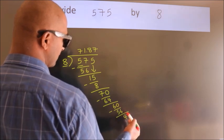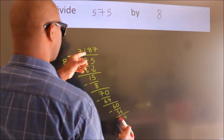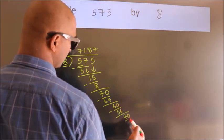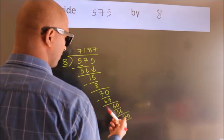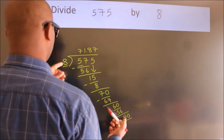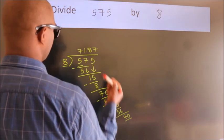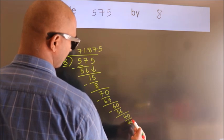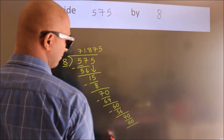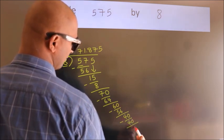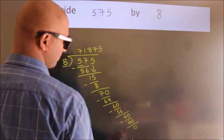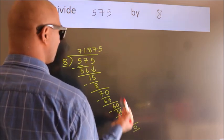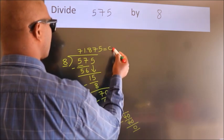After this, we already have the decimal, so directly take 0, making 40. When do we get 40 in the 8 table? 8 times 5 equals 40. Now, we subtract and get 0. Here we got remainder 0, so this is our quotient.